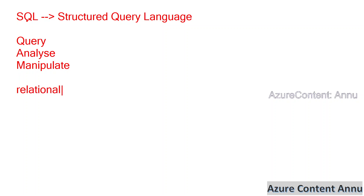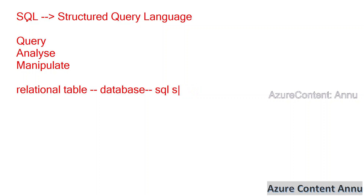The data is stored in relational tables inside a database, inside a SQL server. Inside a SQL server, we can have multiple databases, and inside the database we can have multiple tables where we would have several data.